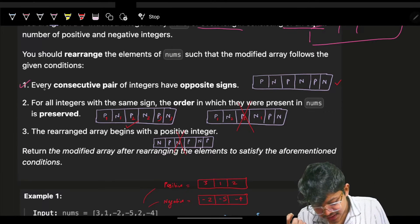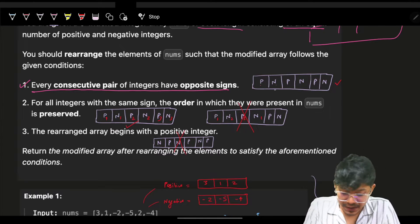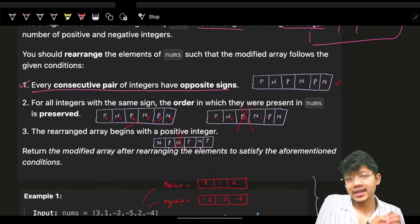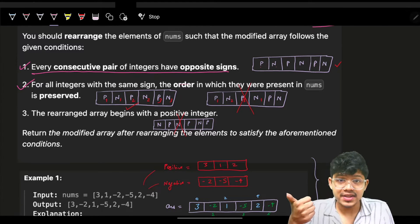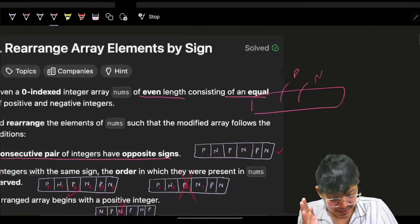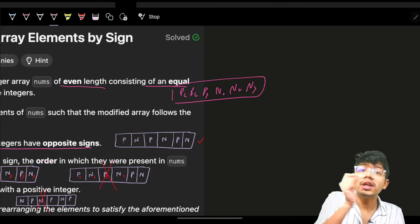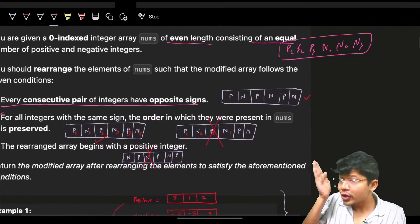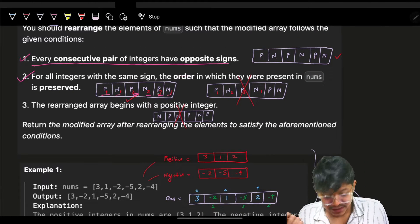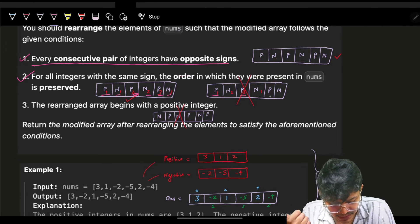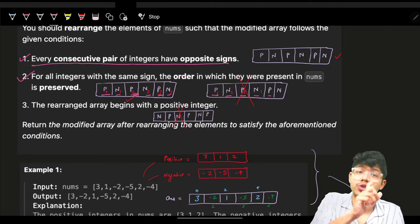The first condition is that every consecutive pair of integers must have opposite signs — so it should be positive, negative, positive, negative, or negative, positive, negative, positive. The second condition is that for all integers with the same sign, the order in which they appear in nums must be preserved. So if we have p1, p2, p3 in nums, then p2 must come after p1 and before p3.